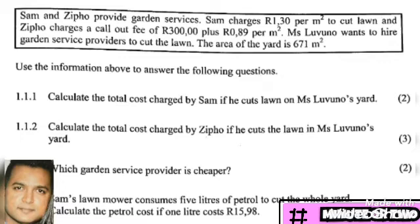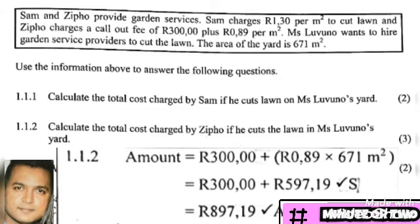Question 1.1.2: calculate the total cost charged by Zippo if he cuts the lawn in Miss Livuno's yard. Zippo's charge is 89 cents per square meter — remember 0.89 means 89 cents. We take the yard size of 671 and multiply by 89 cents, arriving at R597.19. We then add the R300 call-out fee, giving a total of R897.19.